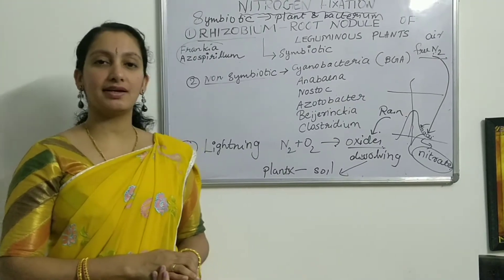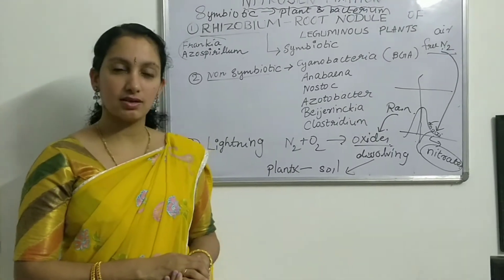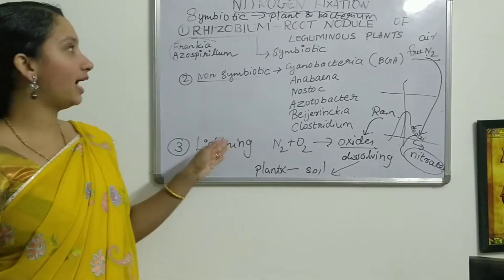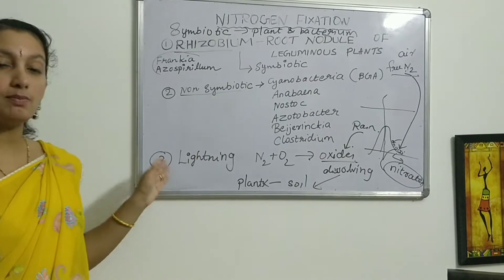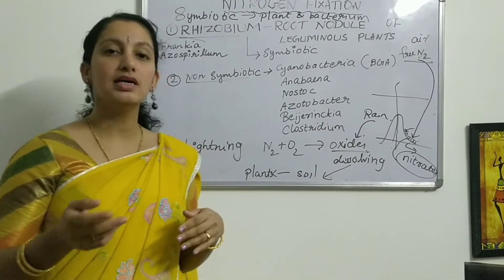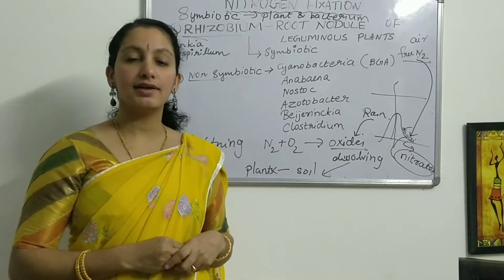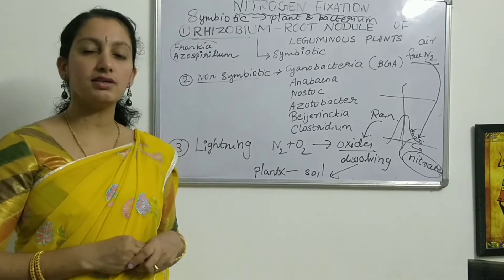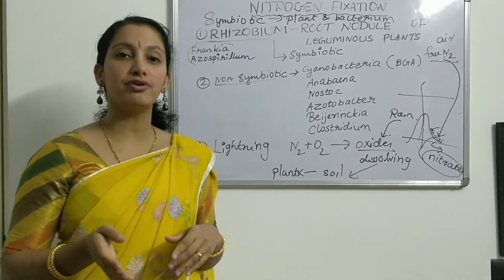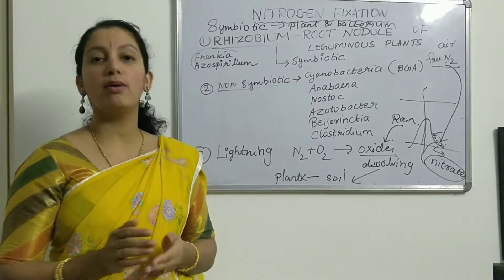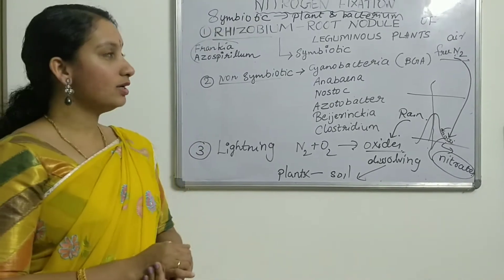Hello students, welcome to the second part of nitrogen fixing organisms. In the last class we covered symbiotic, non-symbiotic, and lightning processes related to nitrogen fixation — converting atmospheric nitrogen, which is a free form, into an available form that plants can use.